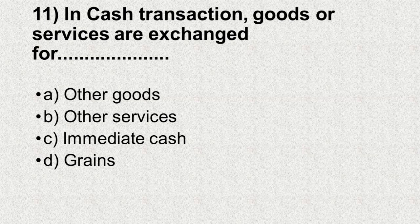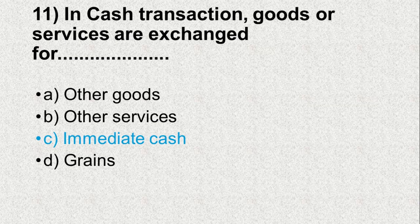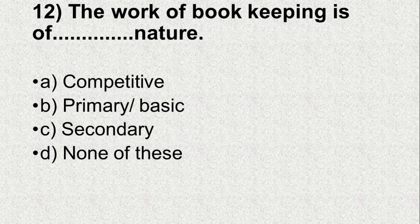Question number 11. In cash transaction, goods or services are exchanged for — Option A: Other goods, B: Other services, C: Immediate cash, D: Grains. And the correct answer is C, Immediate cash.